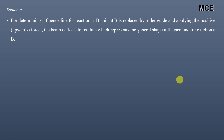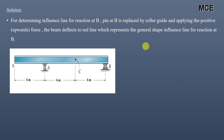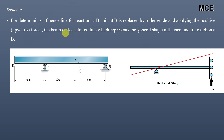To draw the influence line for the vertical reaction at B, according to the Müller-Breslau principle, we replace the pin at B with a roller guide and then apply a positive upward force. The beam will deflect to the red line shown, which represents the general shape of the influence line for reaction at B.